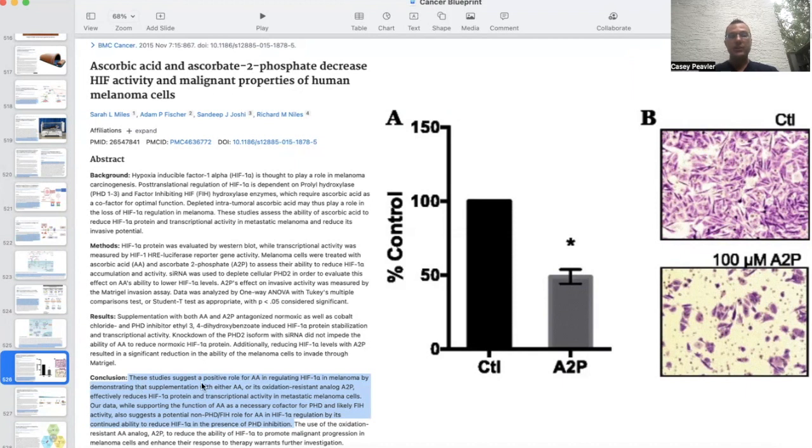As it says in this conclusion, these studies suggested a positive role for ascorbic acid in regulating HIF-1 alpha and melanoma by demonstrating that supplementation with either ascorbic acid or its oxidation-resistant analog ascorbate 2 phosphate effectively reduces HIF-1 alpha protein and transcriptional activity in metastatic melanoma cells.